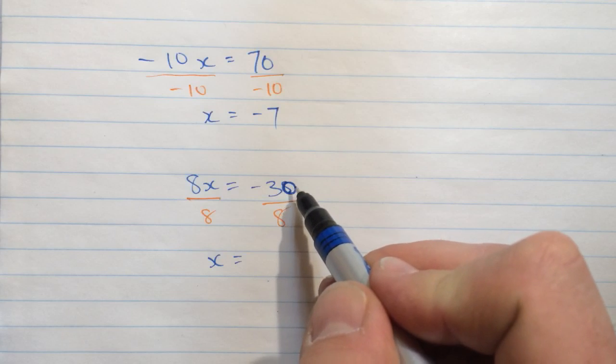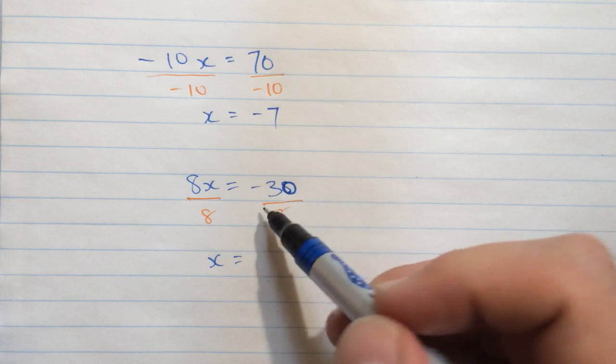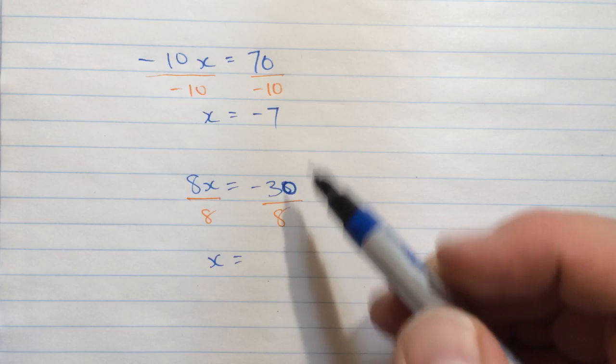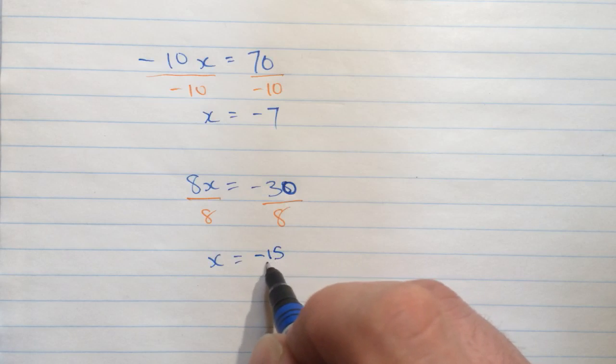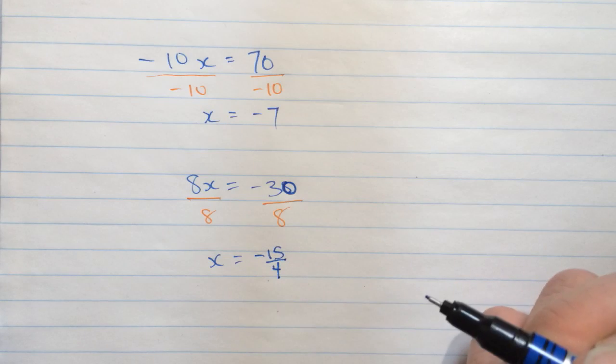Instead of thinking about this as division, this is a fraction here. 30 over 8. And I will just simplify this. I can divide the top and bottom by 2. And I'll be left with 15 over 4. And it's still negative.